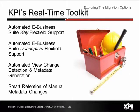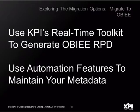Some key features of the KPI Real-Time Toolkit, especially for EBS customers: there is automated key flex field support, automated descriptive flex field support, automatic detection of changes to database views with metadata regeneration as needed, and retention of manual changes in the RPD after views are regenerated. To summarize, you can use the KPI Real-Time Toolkit to generate an OBIE 11G RPD as part of your migration from Discoverer, and use the automation features for key flex field and descriptive flex field to maintain your metadata.